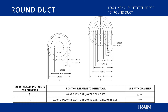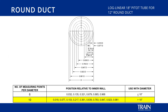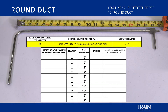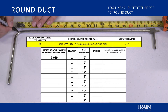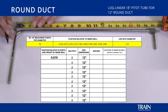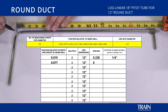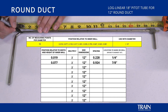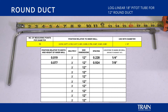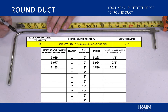For our next example, we will be performing a pitot tube traverse in a 12 inch circular duct. In order to mark our pitot tube for this traverse, we will be using the log linear chart and method, which indicates ten factors to multiply by the diameter of the ductwork. We begin with the first factor, 0.019 multiplied by our 12 inch round duct, which turns out to be a quarter of an inch. The next factor is 0.077, again multiplied by 12 inches, giving us 7 eighths of an inch. The third factor, 0.153, multiplied by 12 inches, results in a 1 and 7 eighths inch measurement.